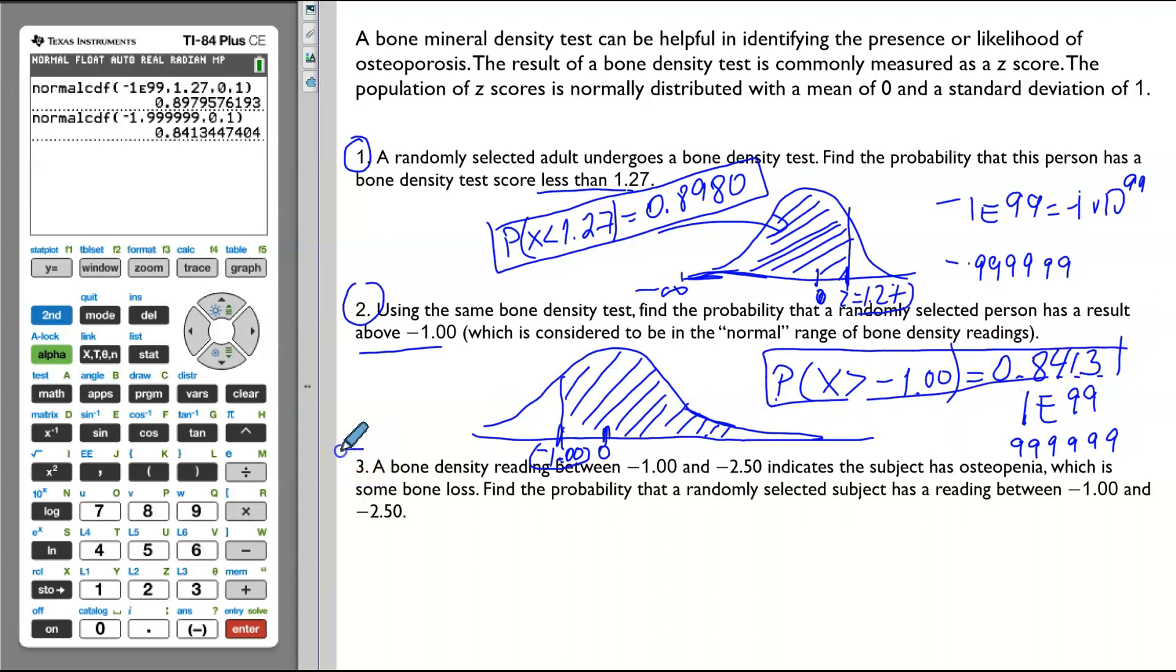Let's do the last part. A bone density reading between negative 1 and negative 2.5 indicates the subject has osteopenia, which is some bone loss. Find the probability that a randomly selected subject has a reading between negative 1.00 and negative 2.5. And, of course, we are going to draw a diagram first.